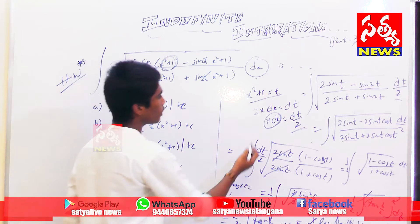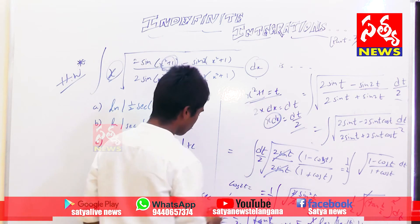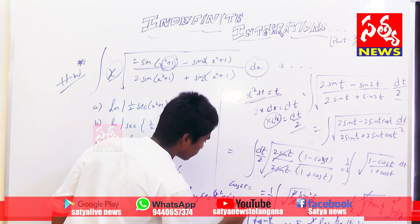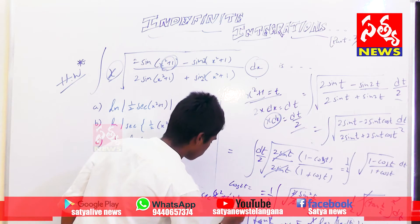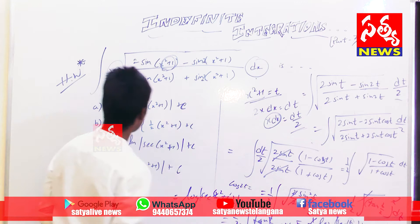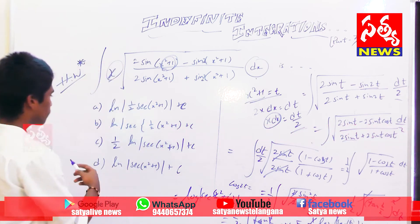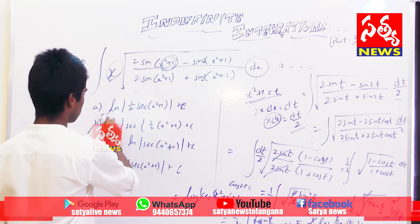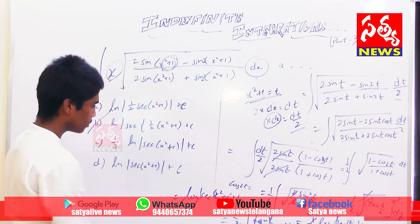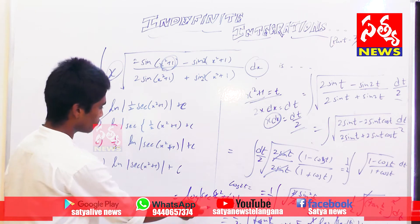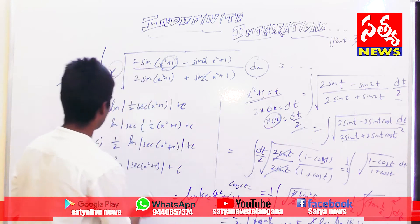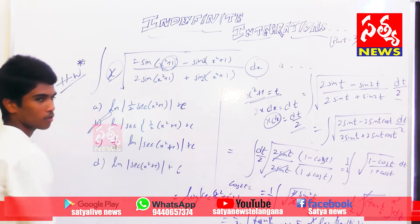Substituting back, t equals x squared plus 1, so the left answer is log|sec((x²+1)/2)| plus c. I think option b is our answer — yes, b is our answer. This is the method for solving this problem.